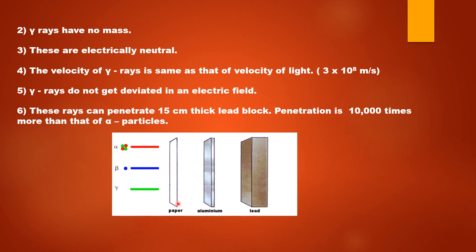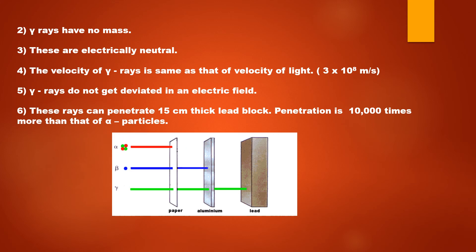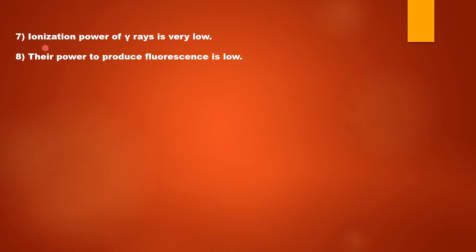The penetration power of gamma rays is very high as compared to alpha and beta radiations. Gamma rays can penetrate a 15 centimeter thick lead block, and their penetration power is 10,000 times more than that of alpha particles. The ionization power of gamma rays is very low because gamma rays have no charge, so they cannot influence the nucleus. The power to produce fluorescence is also very low in the case of gamma rays compared to alpha and beta rays.